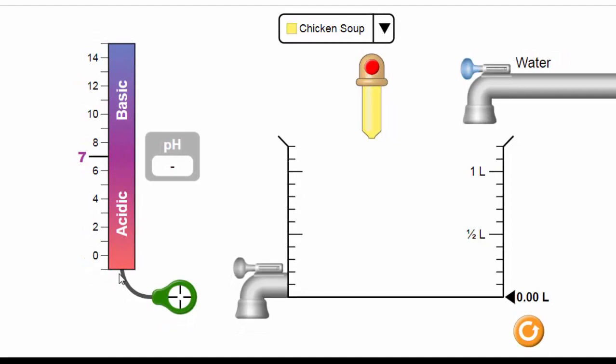Then you can see here the pH scale, and on the scale you can see that the upper part is basic while the lower part is acidic. pH of 7 is neutral, anything above 7 is basic, while anything below 7 is acidic.